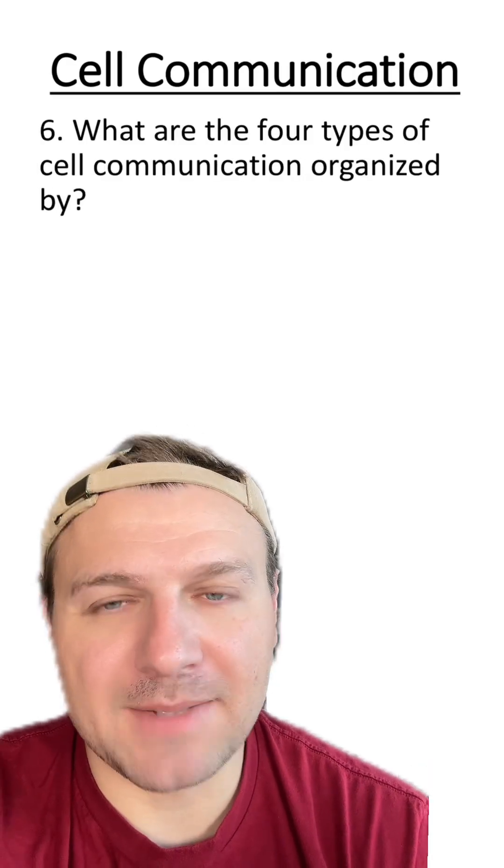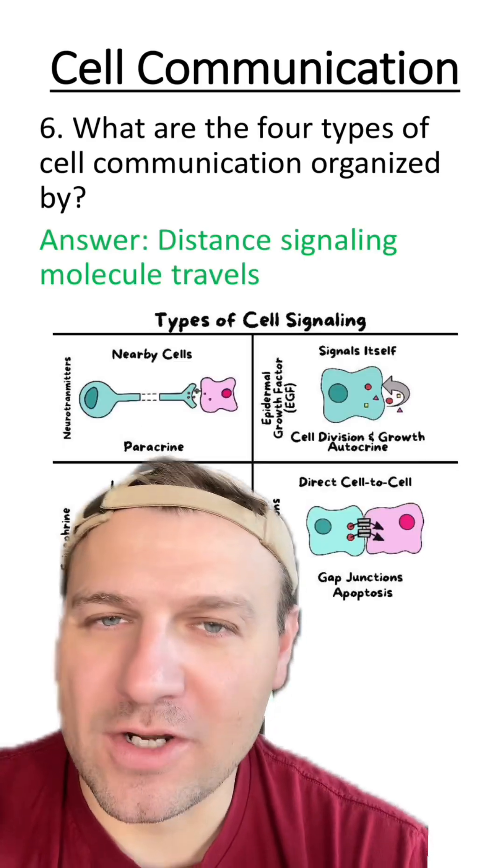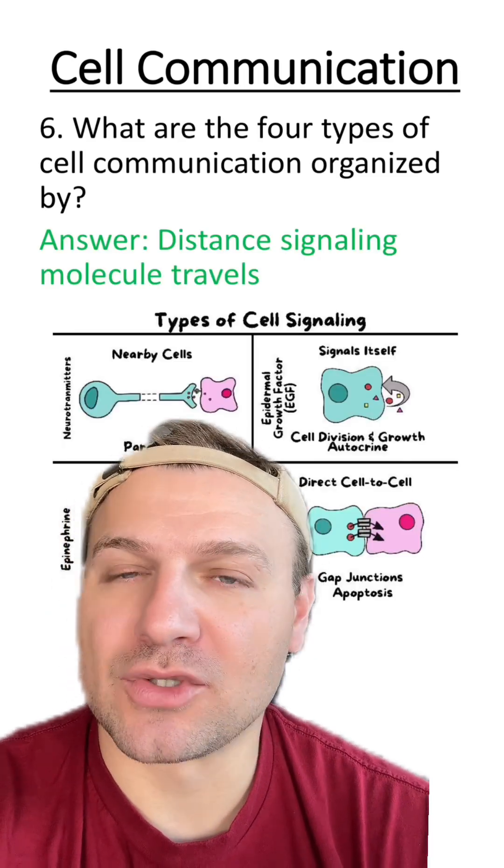Number six, what are the four types of cell communication to organize by? There's four different types. How are they organized? The four different types are organized by the distance the signaling molecule travels.